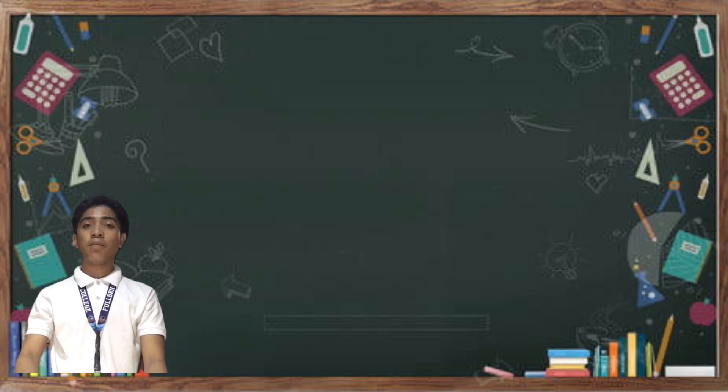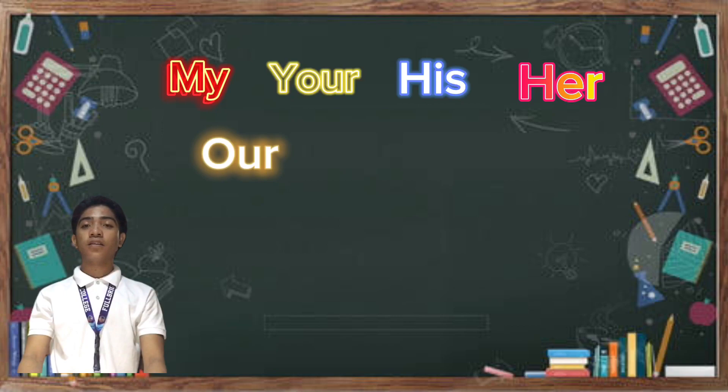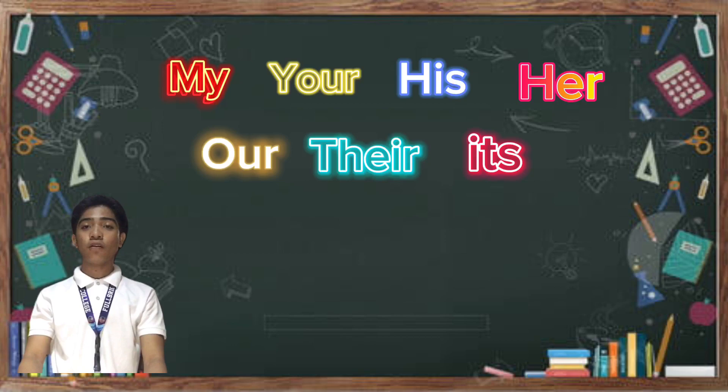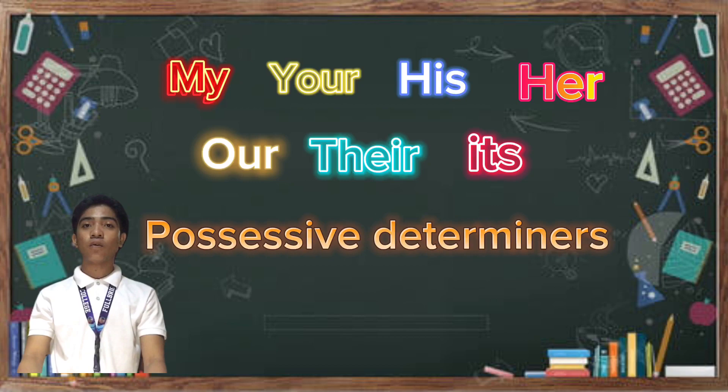Here are the examples of possessive pronouns: my, your, his, her, our, their, and its. But remember, these kinds of possessive pronouns cannot stand alone — they are called possessive determiners or possessive adjectives.